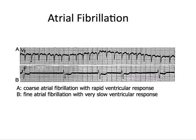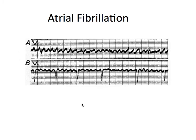Here's another one — this is coarse AFib with RVR; the rate is about 150 to 200. The bottom here is fine AFib with a slow ventricular response. This top one is actually AFlutter and the bottom one is AFib, so it's really subtle to look between the two. You can tell the AFlutter is more of a pointy, sawtooth shape — this would hurt if it went over your skin — whereas down here it's kind of a bumpy surface; it wouldn't cut you.